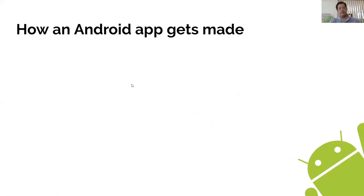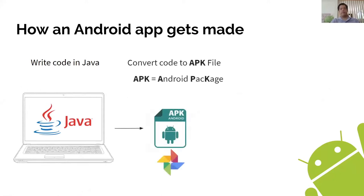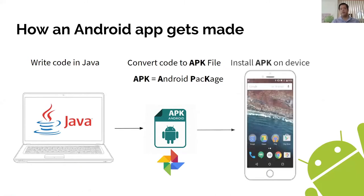So how does an Android app get made? First you need a computer to write code in Java. Once that code is written, it gets compiled and built into an APK file — an Android package file. After the APK file is built, it gets installed onto the device. The moment it's installed, you'll see a little icon and you can launch it — so when you launch an app, you're actually launching the APK file.